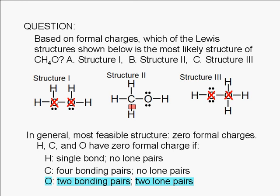Therefore, structure 2 is the only structure shown here where all the atoms have a zero formal charge. The correct answer is B, structure 2.